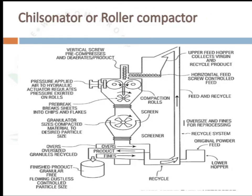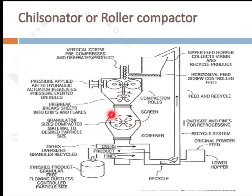The chilsonator works by passing the material to be compacted through two compaction rolls. A horizontal screw feed takes material from the hopper; a vertical screw feed transfers it directly into the compaction rolls, producing a sheet of compacted material. This sheet is pre-broken by pre-breakers, further reduced by a granulator, and different screeners/sieves separate oversized, fine, and desired granules.